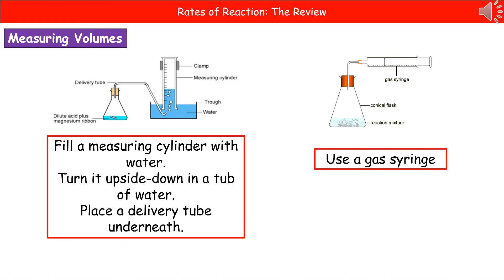In quite a few chemical reactions, one of the products that we're making will be a gas. And what we've got are two possible ways that we can actually measure the volume of gas that we produce.